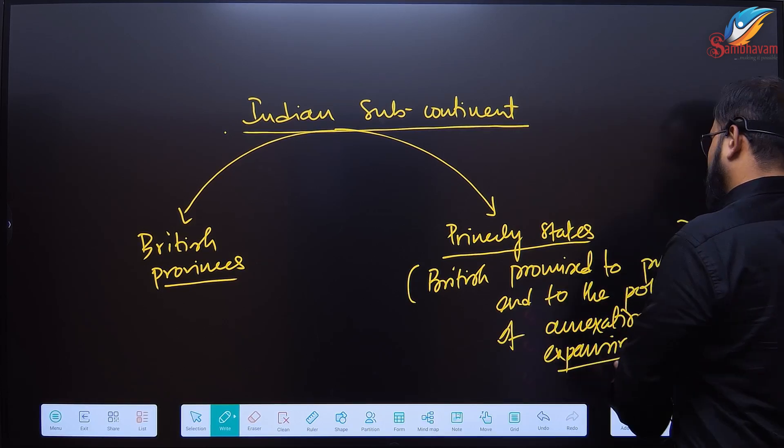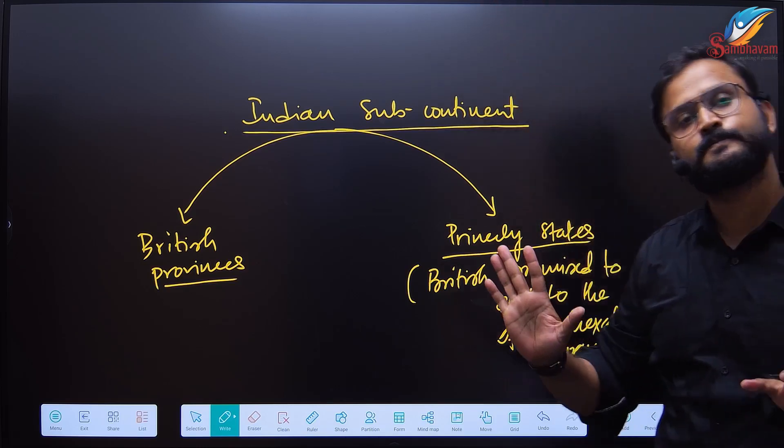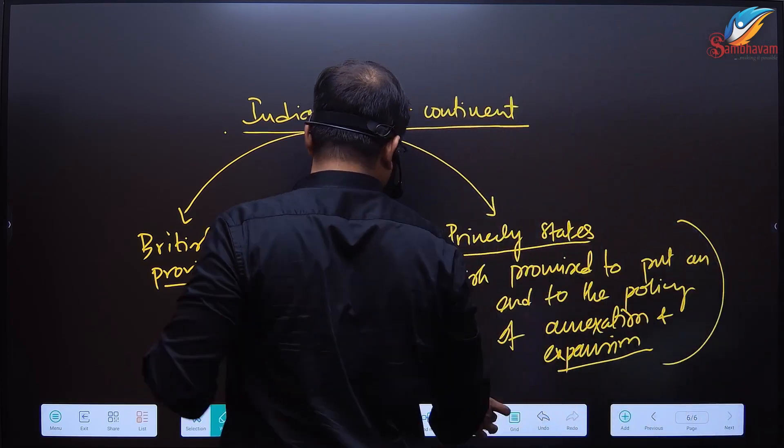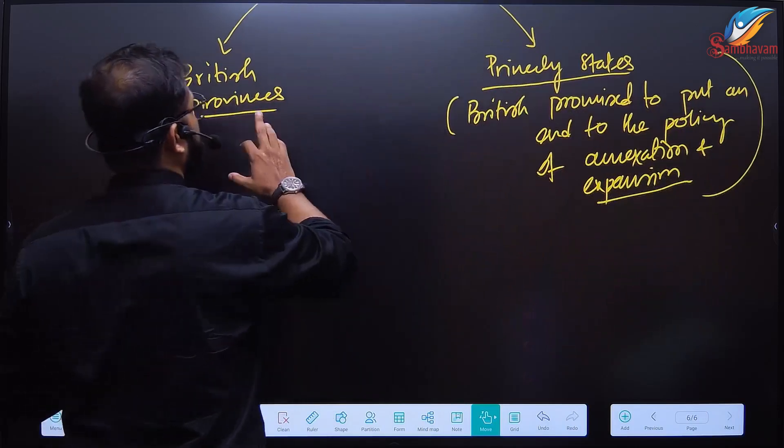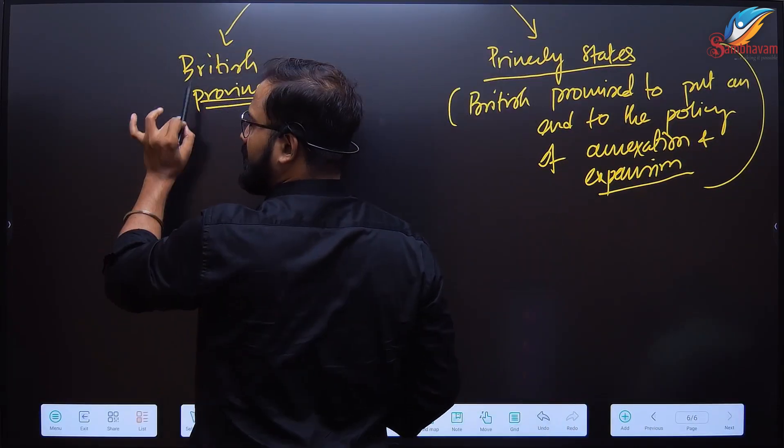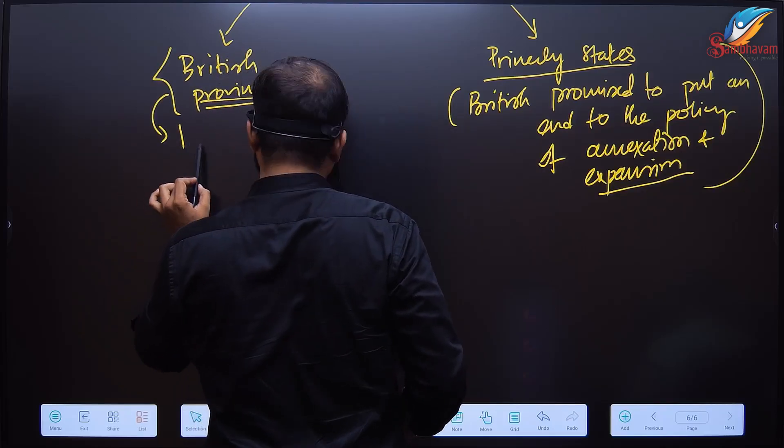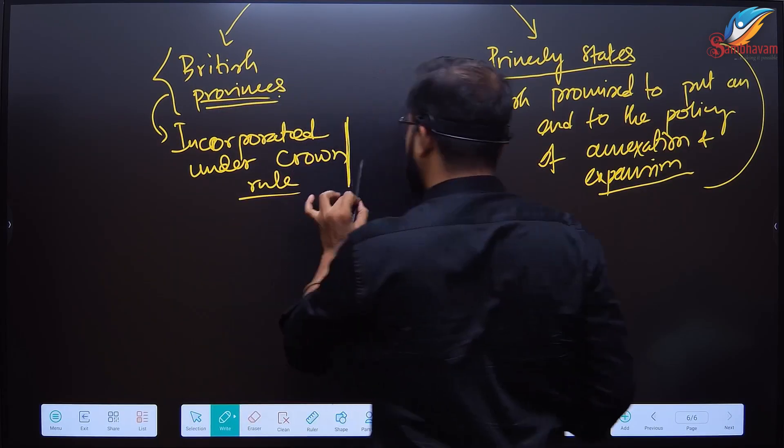Let us understand the British arrangement. The British provinces previously under company rule were taken over or incorporated under crown rule.